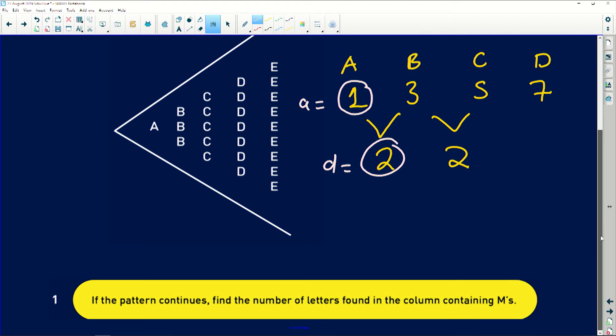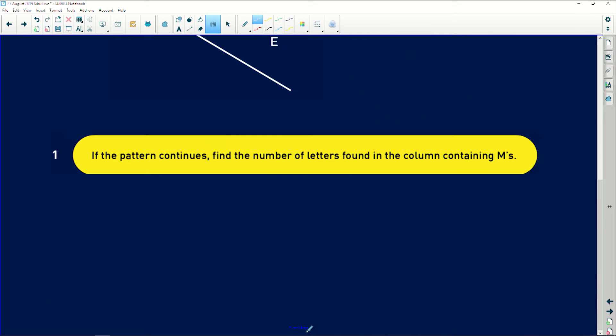So when I've got those two, I can be able to do anything, right? Let's see what the question says. If the pattern continues, find the number of letters found in a column containing M's. Okay cool. So number one, we need to find out here where is M.